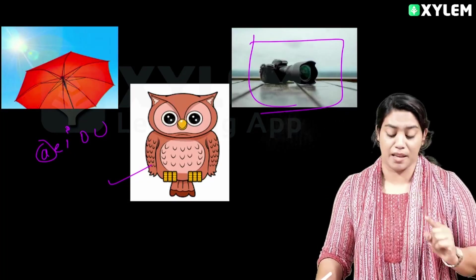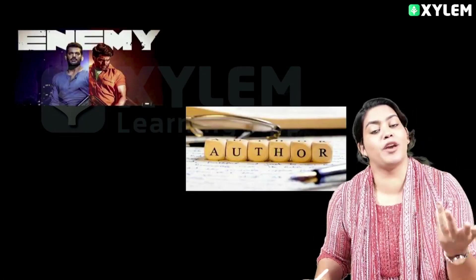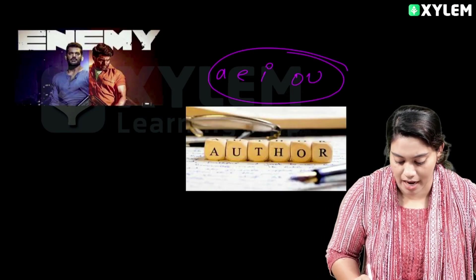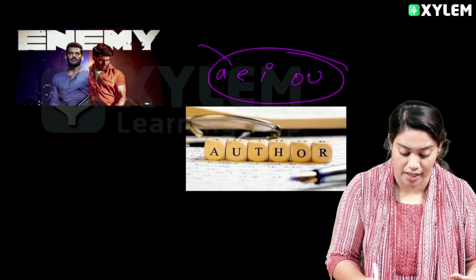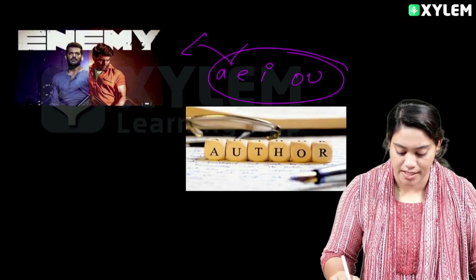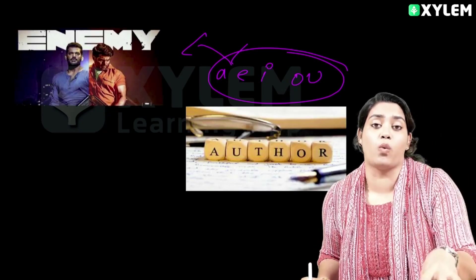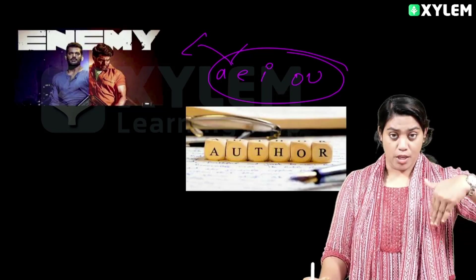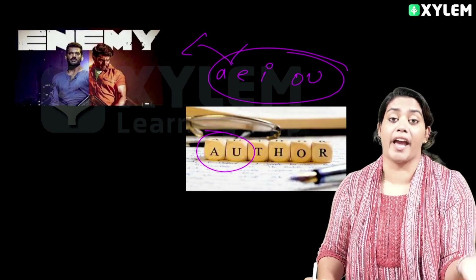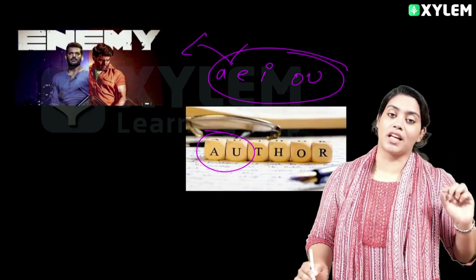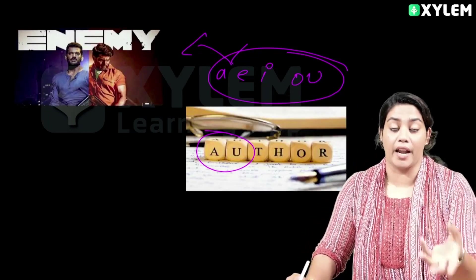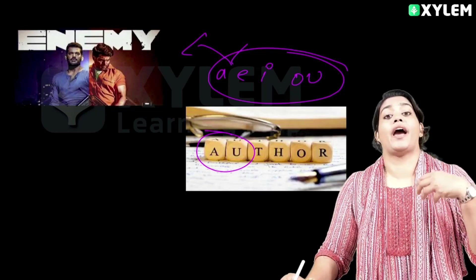An image — is it clear? An image. Next one: enemy — this is a vowel, so an enemy. Next one: we call it 'an author' because the sound is O. An author. So what do we call it? An author.